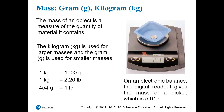Next, we have the units for mass, and in this case, both the metric unit, grams, and the SI unit, kilograms, are pretty useful at the laboratory scale. A nickel weighs about five grams, while a kilogram is about 2.20 pounds.